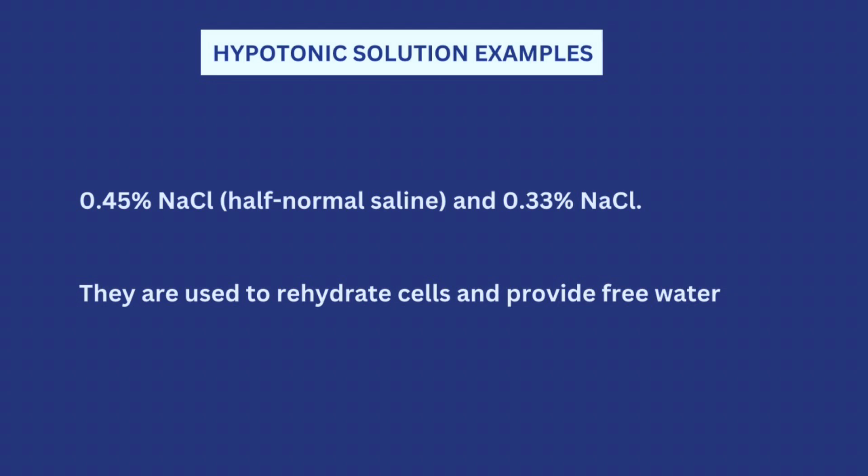The next type of crystalloid IV fluids are the hypotonic solutions. From the word 'hypo,' meaning low, they have lower osmolarity when compared with the osmolarity of the blood plasma. Common examples include half normal saline — 0.45% normal saline — as well as 0.33% normal saline. These hypotonic solutions are used to rehydrate cells and provide free water.